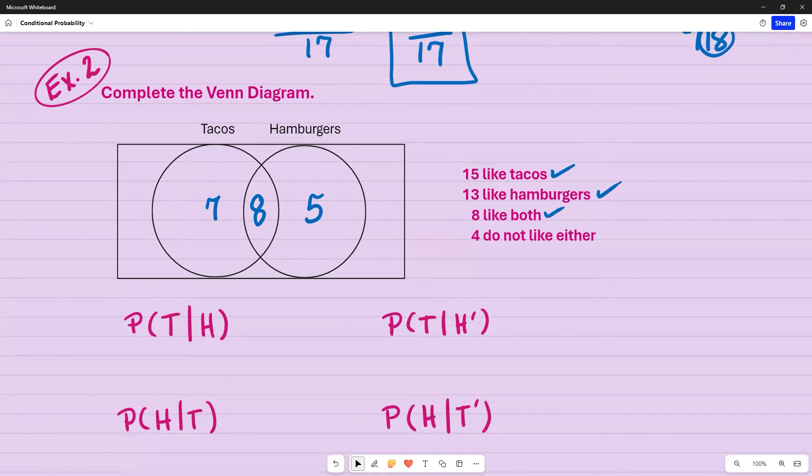Now I'm asked to find the probability of people who like tacos given that they like hamburgers. So what I want to do first always is go to the second part after the given notation. Because this is my total out of only the people who like hamburgers. So that's this entire circle here. That's going to be 13. So out of 13 people, how many of them also like tacos? So that's where your overlap comes into play. So they like both tacos and hamburgers. So that's eight. Eight out of 13.